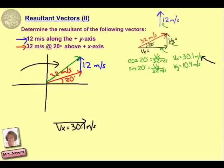Then we want to add the vertical components. We have the vertical component from that 32 meters per second. We just calculated the vertical part of that as being 10.9. And then we also have the vertical part that is added in from our other vector. And that vertical component, and we can say that's vertical component 2, would be 12 meters per second.